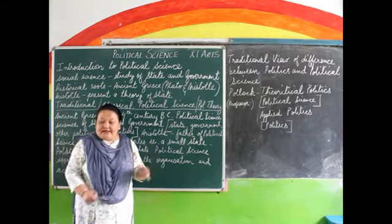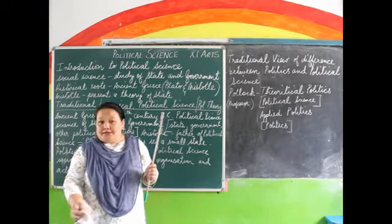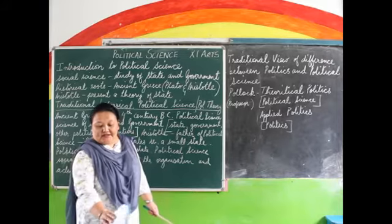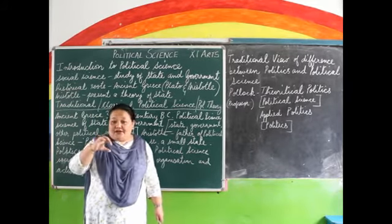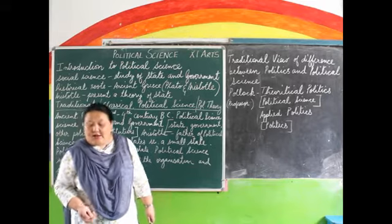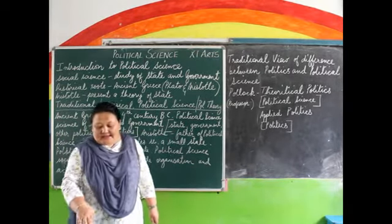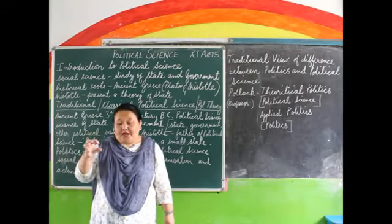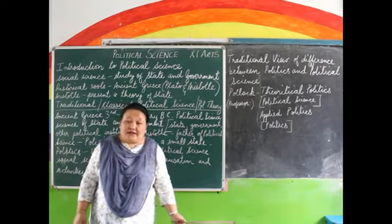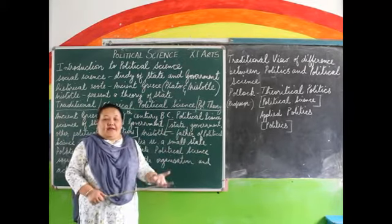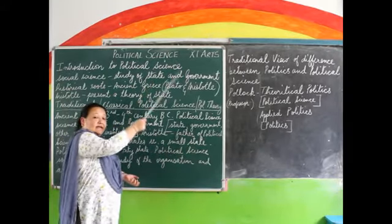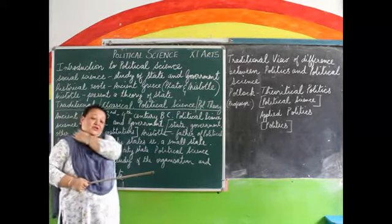Most of the political scientists at the time, when they were explaining and giving us an idea about the definition of the state, were concentrated around the state. They went on to say: political science deals with the state and government; political science begins and ends with the state; and political science is that part of social science which treats of the foundation of the state and the principles of the government. So most of the study was concentrated around the state and government only.